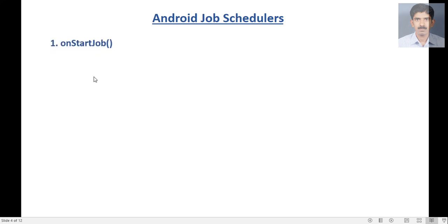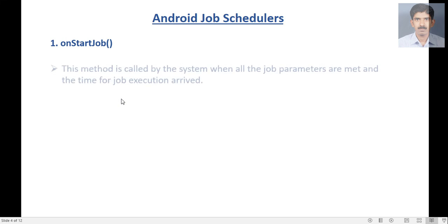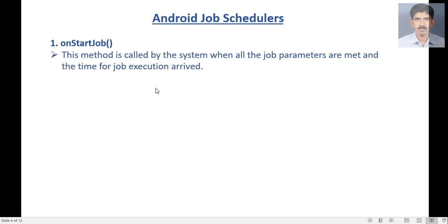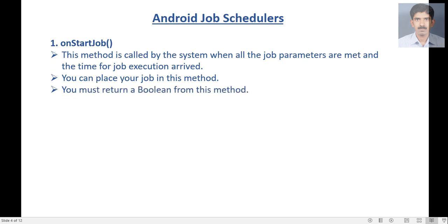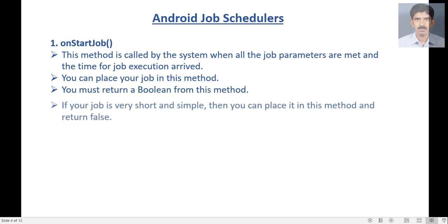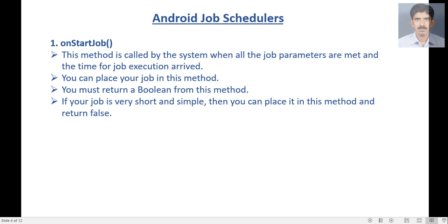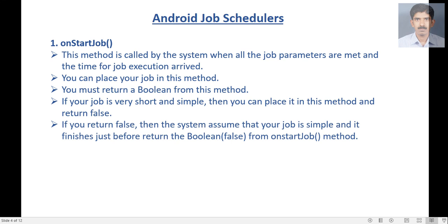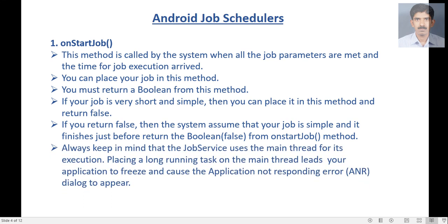Let's consider these two methods separately. The first one is onStartJob. This method is called by the system when all the job parameters are met and the time for job execution has arrived. You can place your job in this method. You must return a boolean from this method. If your job is very short and simple, you can place it in this method and return false. If you return false, the system assumes that your job is very simple and it finishes just before returning the boolean false.